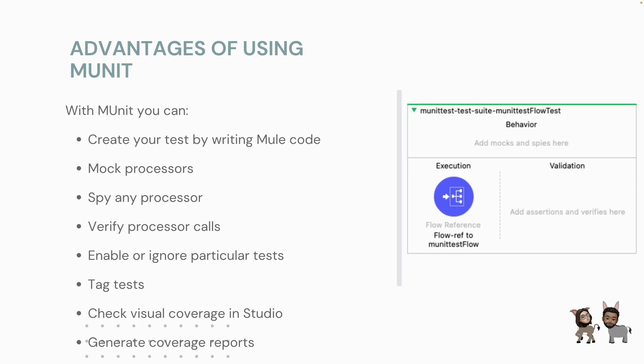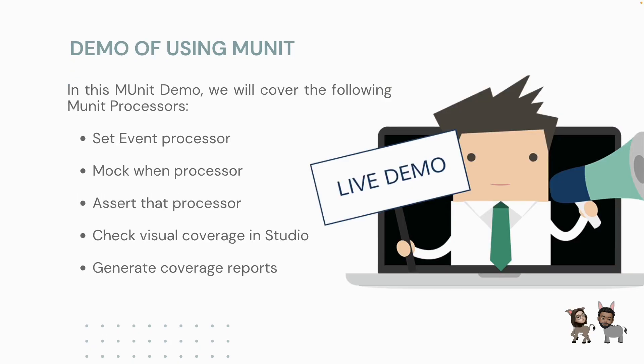You can also check visual coverage in Studio, and last but not least you can generate coverage reports, which we will be doing in our demo. So without further ado, let's jump into the demo. In this MUnit demo we will be covering the following MUnit processors: the Set Event processor, then a Mock When processor where we will be mocking a database processor for the flow, then we will be using Assert by writing a particular condition, then checking the visual coverage in Studio, and last but not least generating coverage reports.